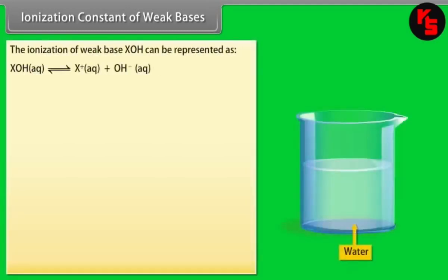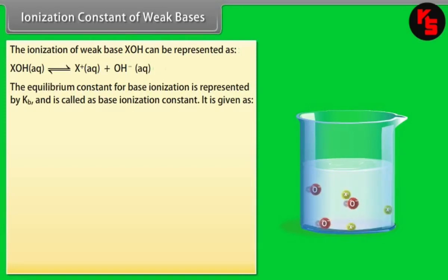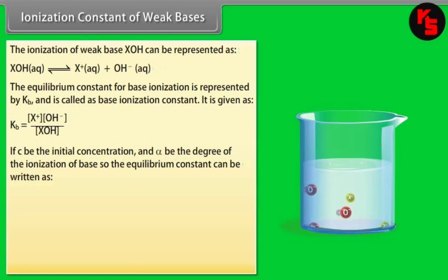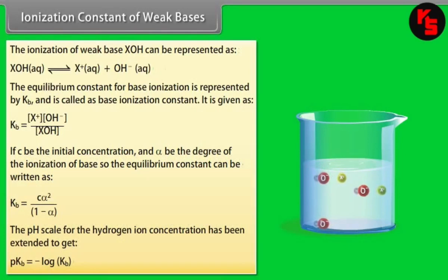Ionization Constant of Weak Bases. The ionization of a weak base XOH is represented with an equilibrium constant Kb, called the base ionization constant. If C is the initial concentration and α is the degree of ionization, then Kb = Cα²/(1−α).